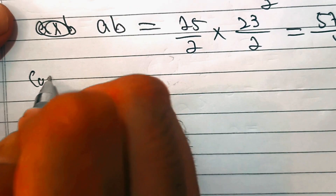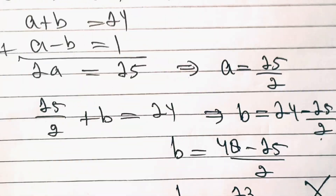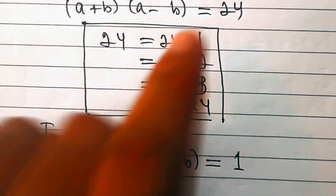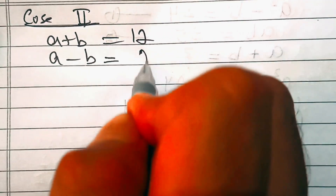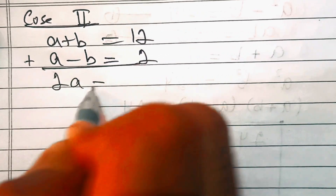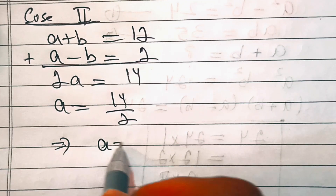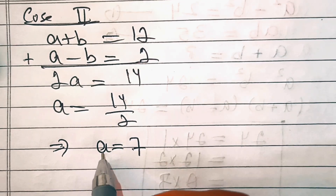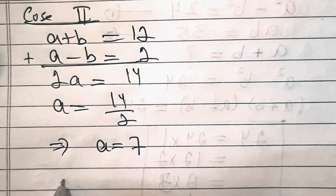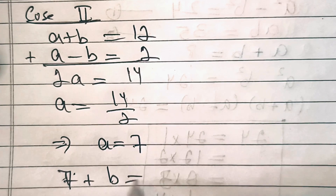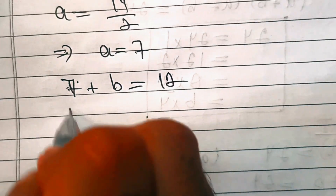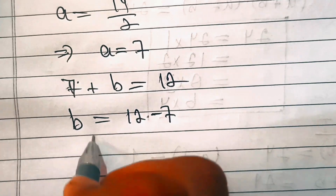Case two: if a plus b equals 12 and a minus b equals 2. Adding these two equations gives 2a equals 14, so a equals 7. Substituting a into a plus b equals 12, we get 7 plus b equals 12, so b equals 12 minus 7, which means b equals 5.